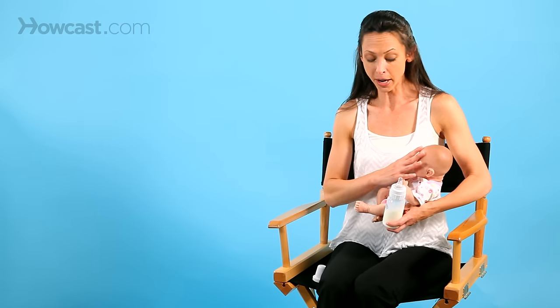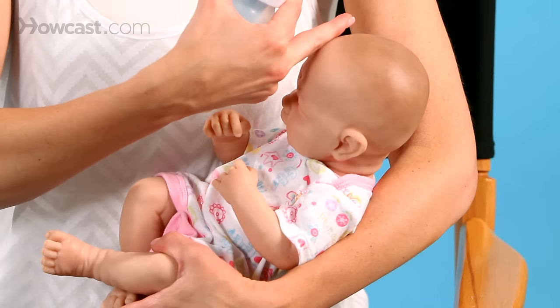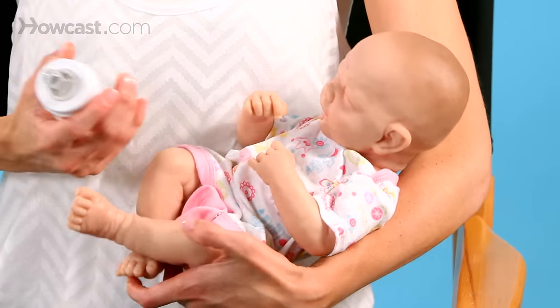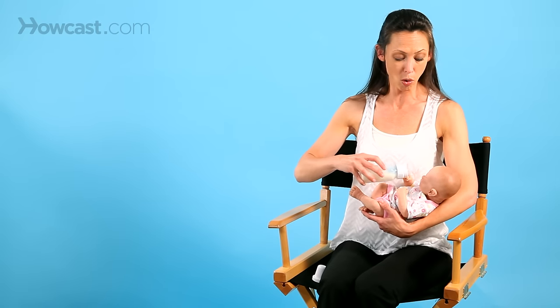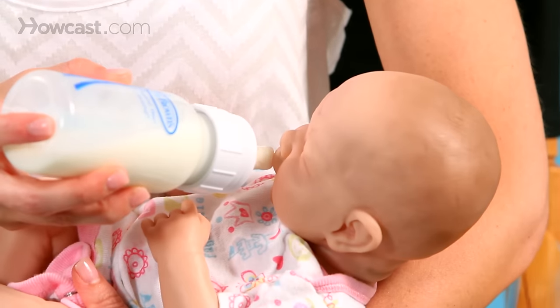When you're feeding a baby you want to have the head much higher than the legs so that the milk can go down comfortably. You want to elongate the baby so that the stomach and the chest area isn't scrunched up together. So holding the baby like this with the head much higher than the feet and the stomach elongated, you just want to hold the bottle and gently push it into the baby's mouth.